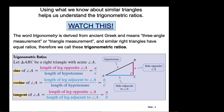Let triangle ABC be a right triangle with acute angle A. Notice in the figure: angles are labeled with capital letters and side lengths with corresponding lowercase letters. Sine of angle A equals the length of the leg opposite A divided by the hypotenuse — in this figure, that's a over c. Cosine of angle A equals the length of the leg adjacent to angle A divided by the hypotenuse — that's b over c. Tangent of angle A equals the length of the leg opposite A divided by the length of the leg adjacent to A — that's a divided by b.